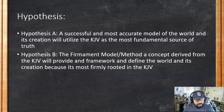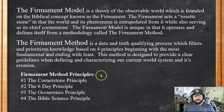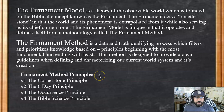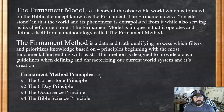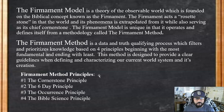So those are the two hypotheses. We're going to apply those hypotheses and lay out the principle. The Firmament Model is a theory of the observable world, which is founded in a biblical concept known as the Firmament. The Firmament acts as a Rosetta stone in that the world and its phenomena are extrapolated from it, and it also serves as its chief cornerstone.